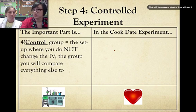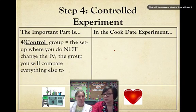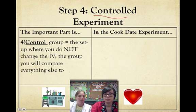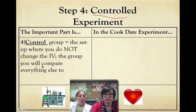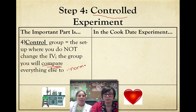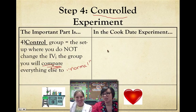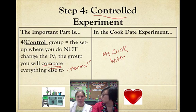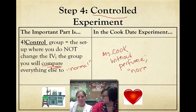Still talking about a controlled experiment — step four of the scientific method. It contains five things. The next important part is the control group. The control group is really important — it's in the name 'controlled experiment.' This is the setup where you do not change the independent variable. Another way to think of it: it's the group you compare everything else to — your baseline, your normal. In the Cook experiment, the control group is Ms. Cook in her natural state, not changing anything, just going up to random people and asking for dates.